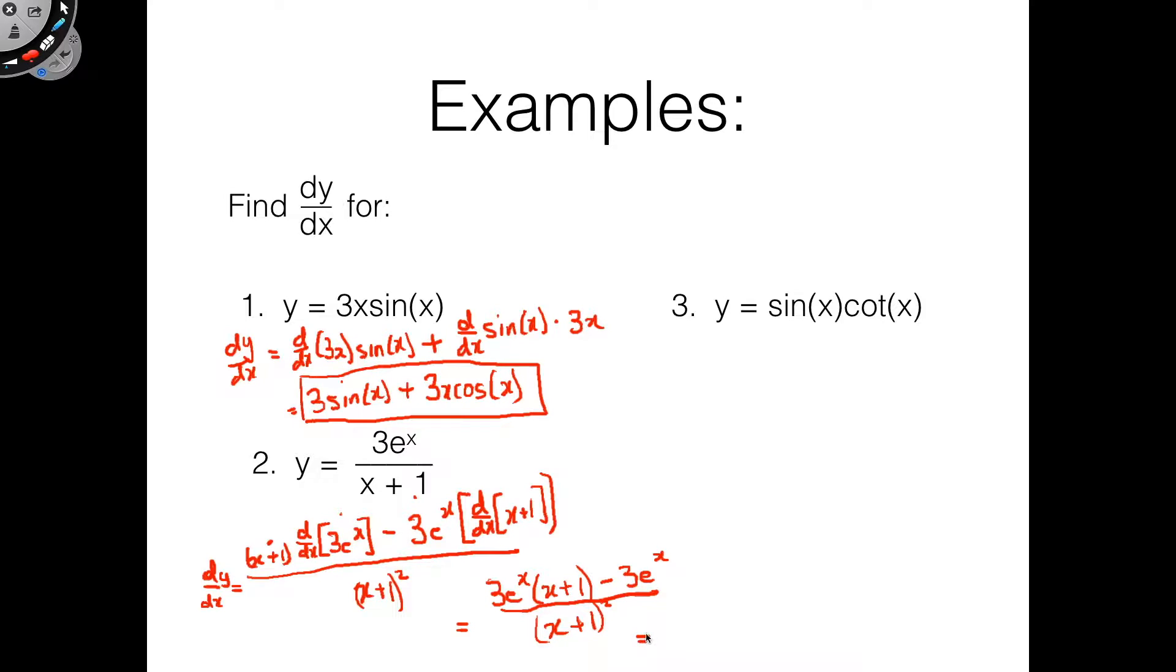Now we can simplify this just a little bit. If we take out a 3e^x we get (x+1-1) over (x+1) squared and these two are going to cancel. So you'd be left with 3e^x times x over (x+1) squared.